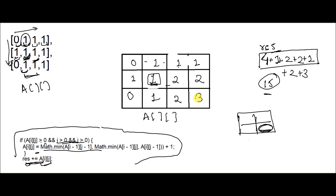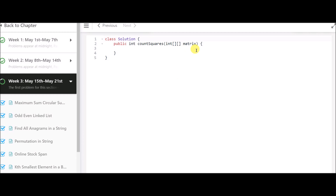The result comes out to fifteen, which is our answer. The last element with value three means it is included in three squares as the right and bottom-most element — one 1×1 square, one 2×2 square, and one 3×3 square. The major idea is to consider each element as the right and bottom-most element of a square.